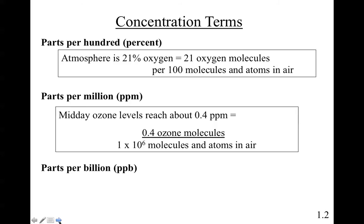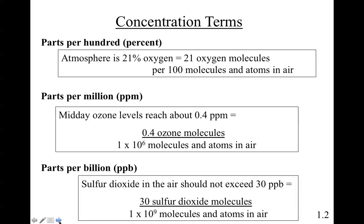Parts per billion: sulfur dioxide in the air should not exceed 30 ppb. That would be 30 sulfur dioxide molecules divided by 1 × 10⁹ molecules and atoms in air. So it depends on what you're studying and the amounts that could be of concern to the ecology you're investigating.